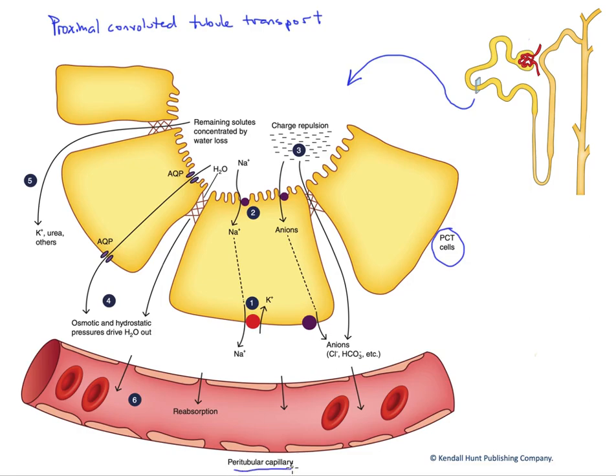Surrounded by a peritubular capillary. Now recall that massive filtration just occurred prior to the proximal convoluted tubule at the glomerular capillaries. Many of the substances, including most of the water, needs to be reabsorbed from that filtrate. And so our proximal convoluted tubule is the first site in the nephron available for this massive reabsorption.